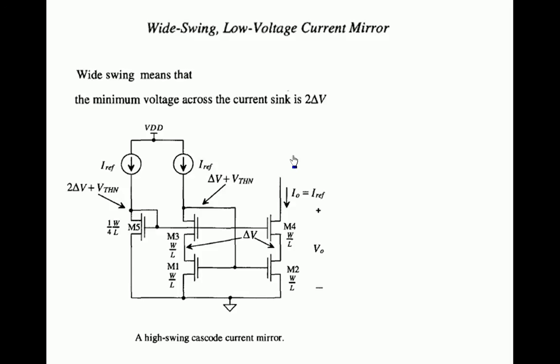Already we have seen that in the regular cascode current mirror, V0 minimum is 2 delta V plus Vt. To reduce that Vt, we modified the cascode current mirror such that one extra transistor is used whose width is four times lesser than the other transistors. The same principle here: we use a transistor whose width is one-fourth times that of other transistors. By reducing width, we can increase the overdrive voltage, so for this transistor the gate voltage will become 2 delta V plus Vt.